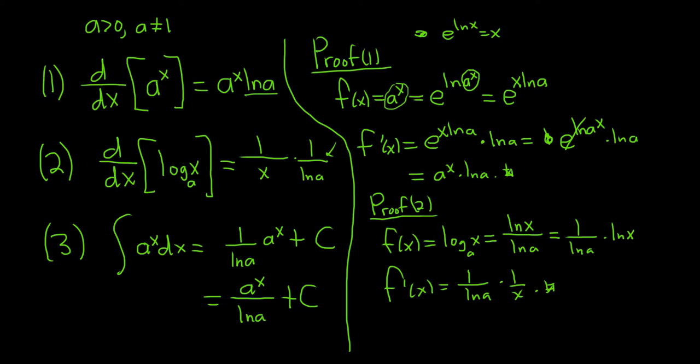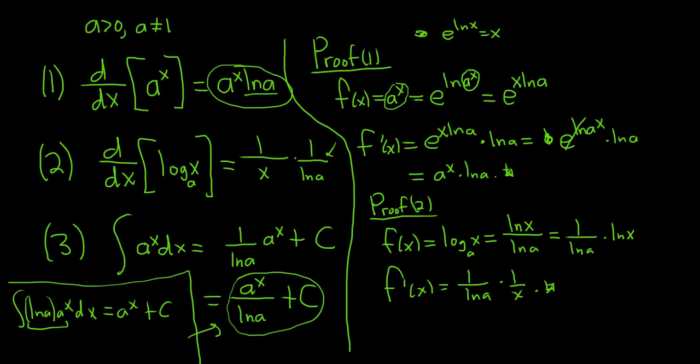So the first two proofs aren't so bad. The third one, again, is kind of a consequence. Let's look at it. Let me see if I can squeeze it in over here. So we're saying that the integral of a to the x is this, right? So basically, if you multiply both sides of this by ln a, you would get ln a. We're not going to prove it, but maybe just talk about it. And you ask yourself, what's a function whose derivative is this? Well, a to the x, because the derivative of a to the x is a to the x ln a. So you start with this, and then you divide both sides by the natural log of a, and you get this. So really easy to memorize. When you differentiate, you multiply. When you integrate, you divide.